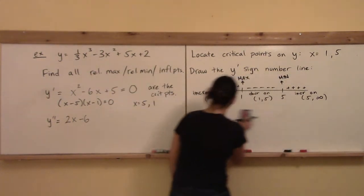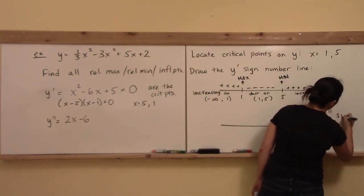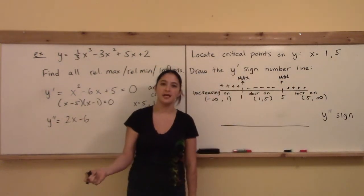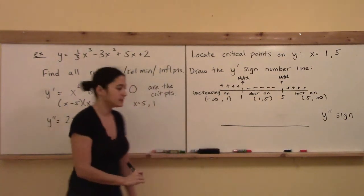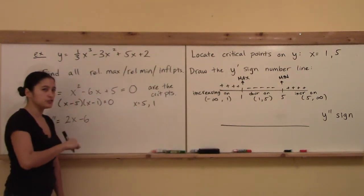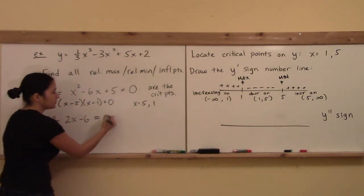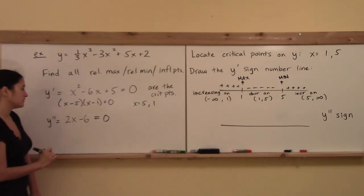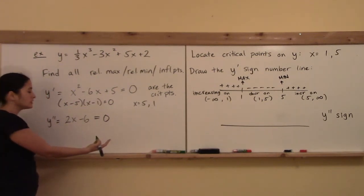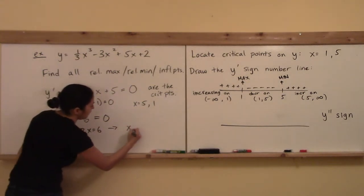Now let's draw the y'' sign number line. Remember: something can only change sign if it passes through zero — in the case where it exists everywhere, which applies here. Setting 2x minus 6 equal to zero gives 2x equals 6, or x equals 3. This is not a critical point — a critical point requires a horizontal tangent or a non-existent derivative in the first derivative, not the second.